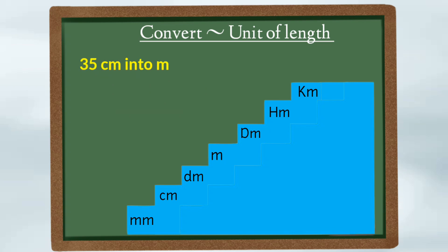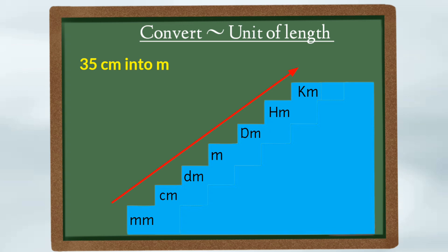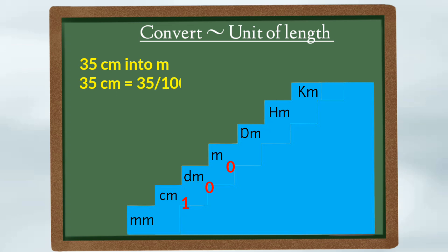Next, let's convert 35 centimeters into meters. Here we are going from a smaller unit to a larger unit, so we divide. We put 1 below centimeter followed by zeros up to meter — that gives us 100. So 1 centimeter equals 1 ÷ 100 meters. Therefore, 35 centimeters equals 35 ÷ 100 = 0.35 meters.